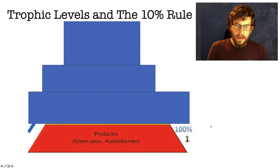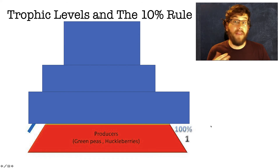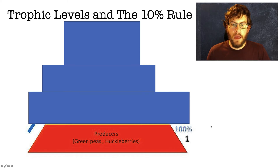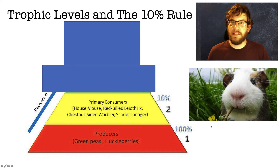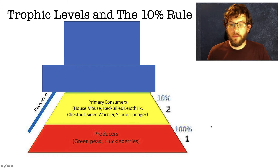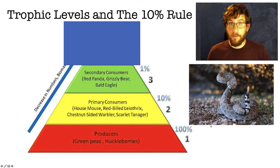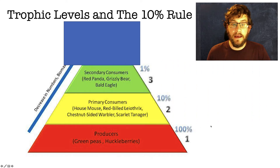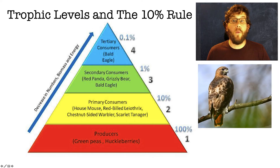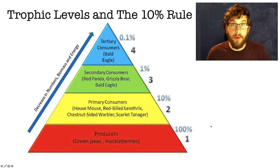Let's look at this. At the producer level, we have 100% available energy — and keep in mind, this is net primary productivity, so plants have already used their share. Moving up to the next level, the primary consumers — herbivores like cows, sheep, deer — only 10% is available. That's the second trophic level. Moving to secondary consumers, you have 1% availability. Then tertiary consumers have 0.1% of available energy. This is where you find apex predators: wolves, mountain lions, bald eagles, grizzly bears.